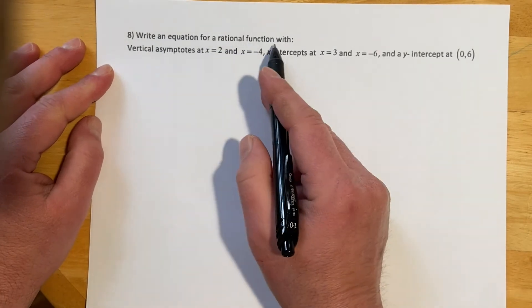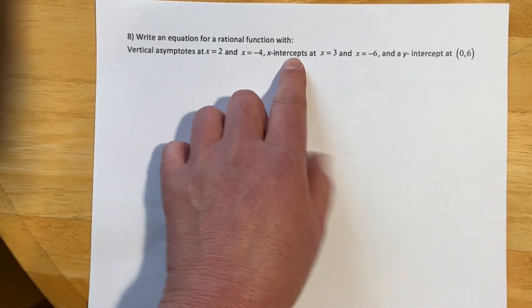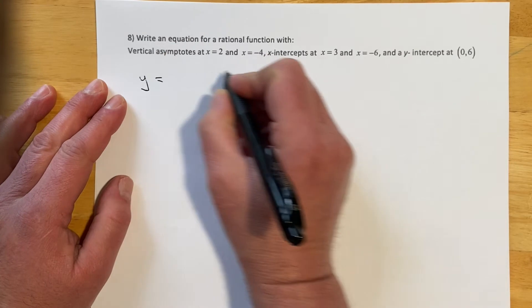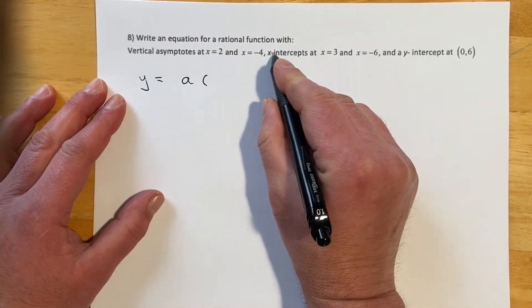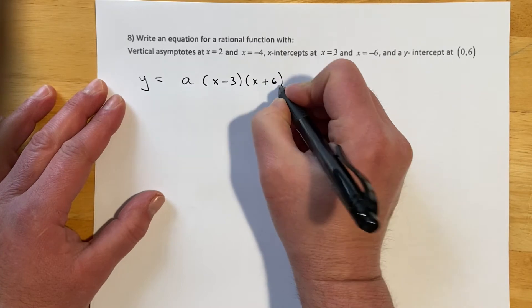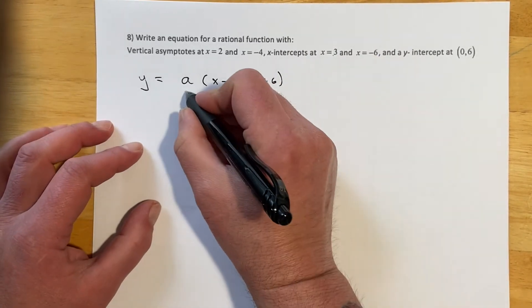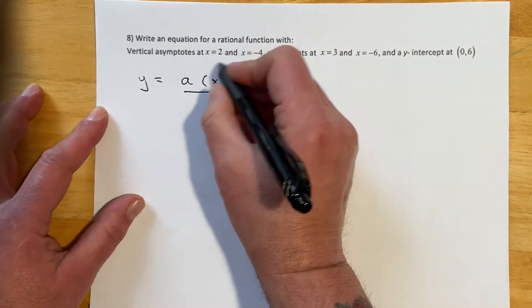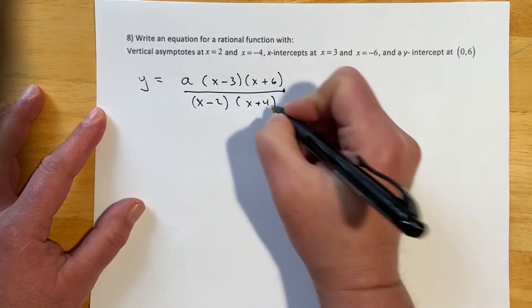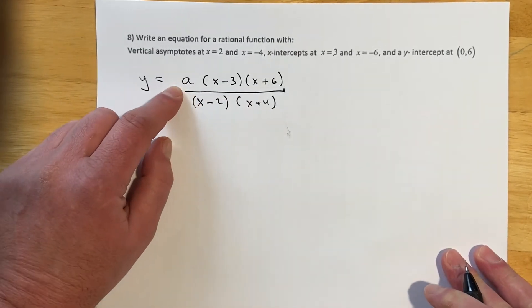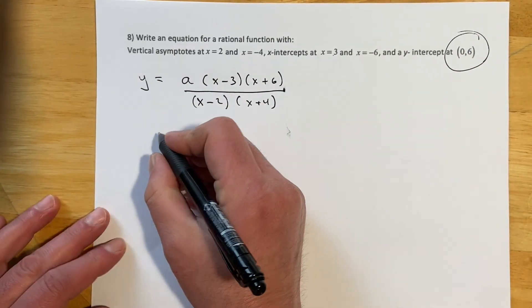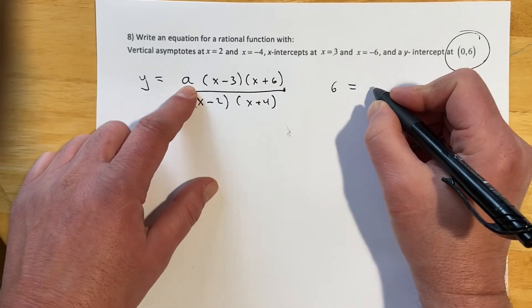Okay, so for this first one, we're asked to write the equation of a rational function with vertical asymptotes here, X-intercepts here, and a Y-intercept there. So what that would look like is we would say Y equals, and we're going to have that stretch factor of A. Our X-intercepts are our numerators, so we're going to have an X minus 3. If we have an intercept of 3, we'll have an X plus 6 to accommodate that X negative 6. And then our denominator is our vertical asymptotes, so these are going to just come over and make factors. So we'd have X minus 2, and then bring in the 4, X plus 4. So that's great, but we don't know the stretch factor yet, so that's where that Y-intercept will come in. And I know when X is 0, Y is 6, so I can put that in and then solve for the A.